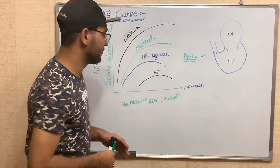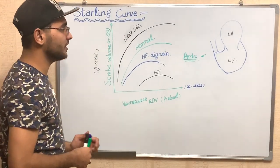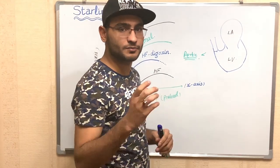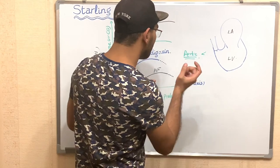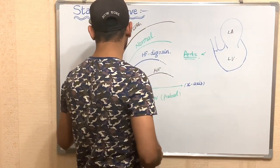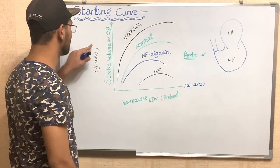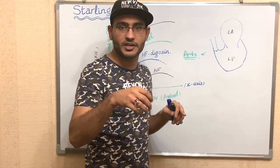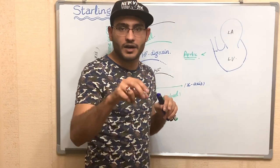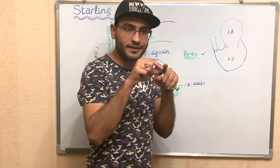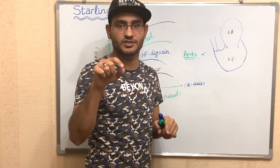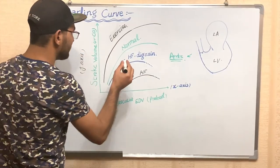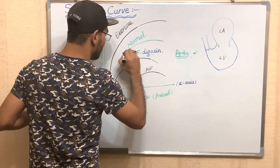Stroke volume is the volume which is pushed out from the ventricle into the vessel. Stroke volume is also related to cardiac output. When the ventricle contracts during systole, the volume pushed out from the ventricle to the vessel is known as the stroke volume or cardiac output. This is represented graphically, and the normal line in the graph represents the baseline condition.